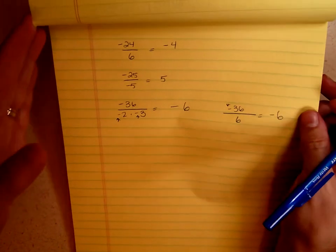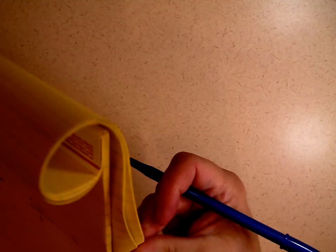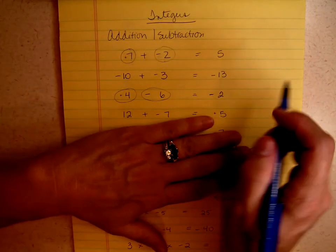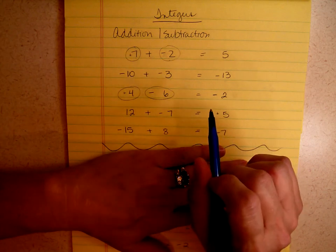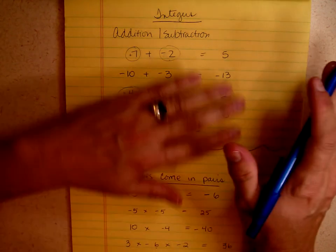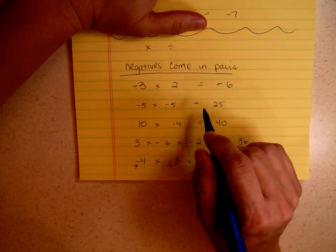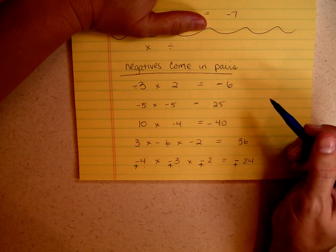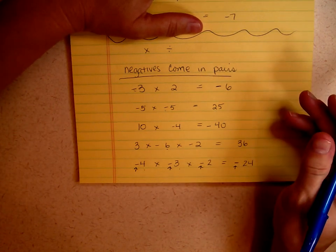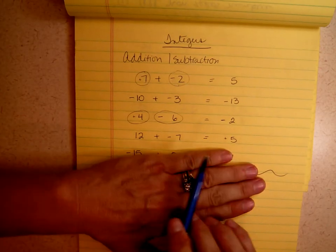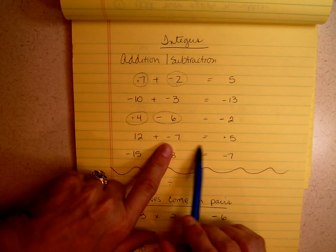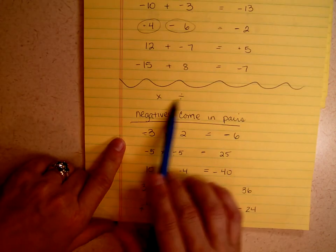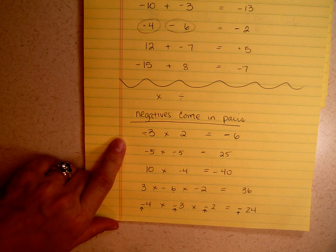Remember: the rules for integers are different for addition and subtraction than they are for multiplication and division. For addition and subtraction, if the signs are the same, you simply add and keep the sign; if the signs are different, you subtract and keep the sign of the bigger number. For multiplication and division, negatives come in pairs — 2, 4, 6, 8, or 10. Please remember that's a huge difference. Don't take something like 12 plus negative 7 and say the answer is negative 5 because negatives come in pairs — that rule only applies to multiplication and division.